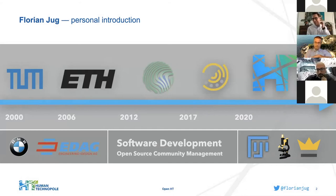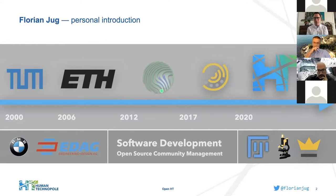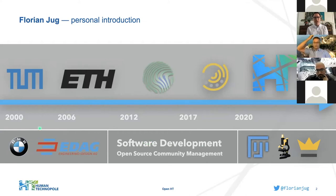I started first as a postdoc in Gene Meyer's lab, then moved to the building next door at the Center of Systems Biology Dresden, part of the Max Planck Institute, where I started my own lab. Importantly, alongside my academic research I have always been involved in software development activities — first to finance my studies, and later alongside my academic work to bring technologies to our users.